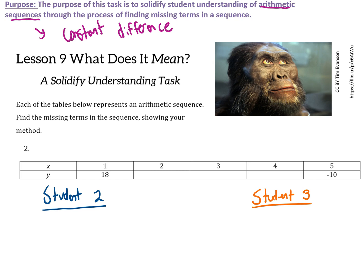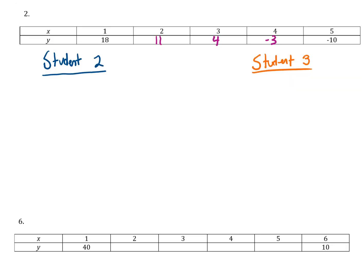One way is to fill in this table by finding what's in between 18 and negative 10, which is 4, then what's in between 18 and 4, which is 11, and what's in between 4 and negative 10, which is negative 3. That's a good strategy to start with, but if you go down to problem 6...